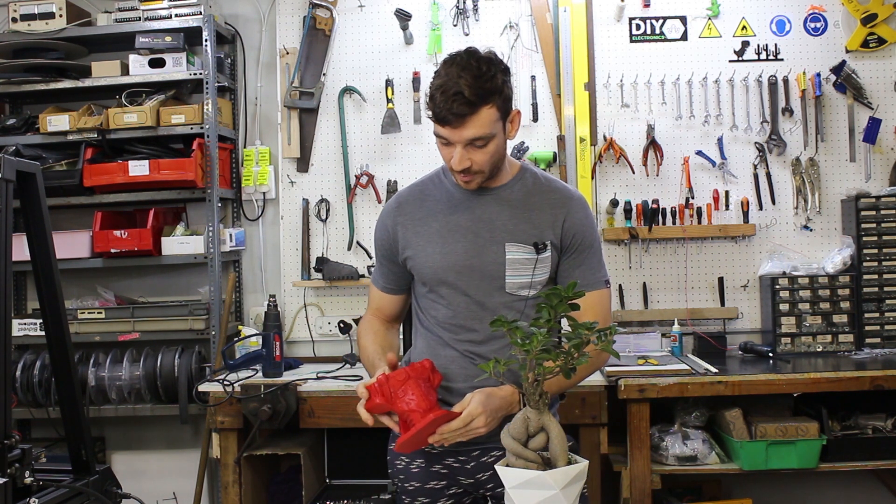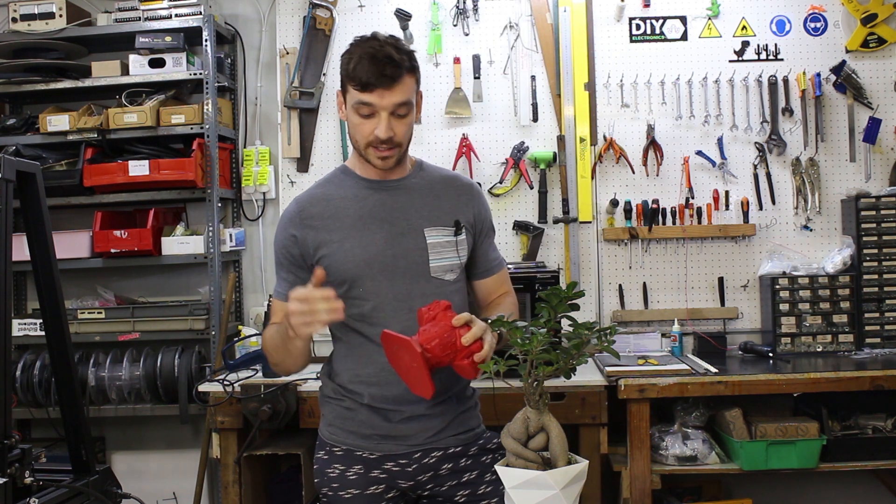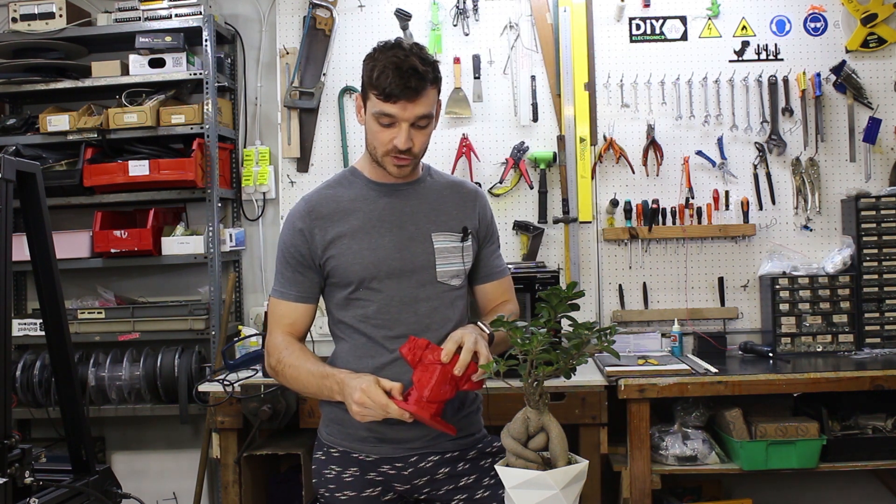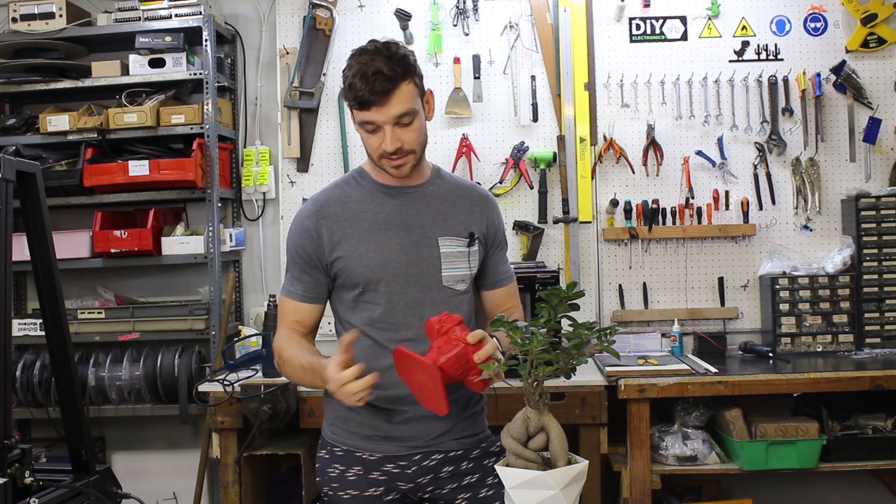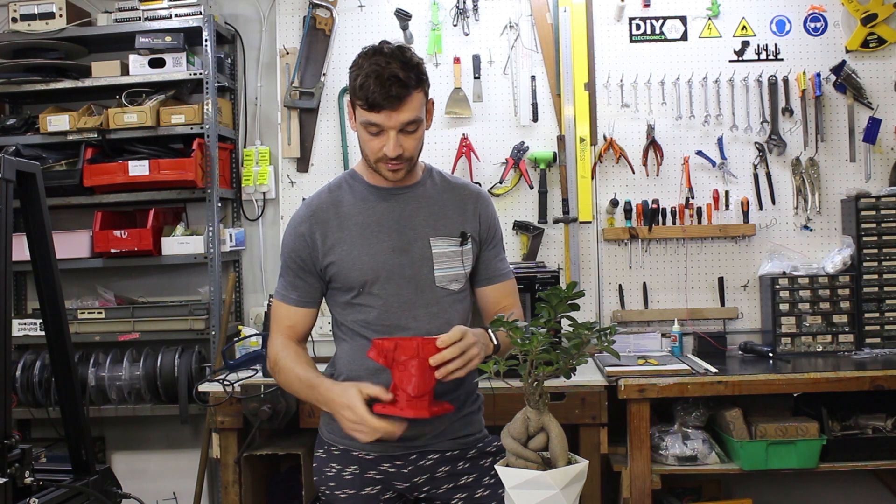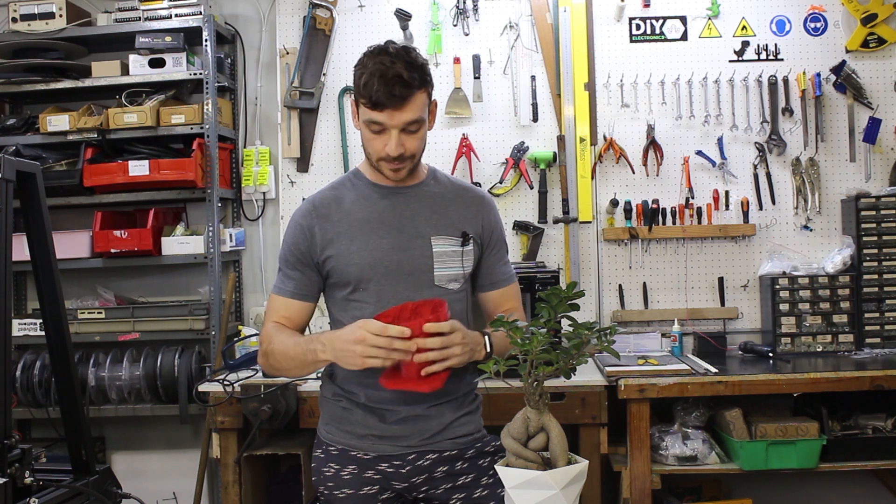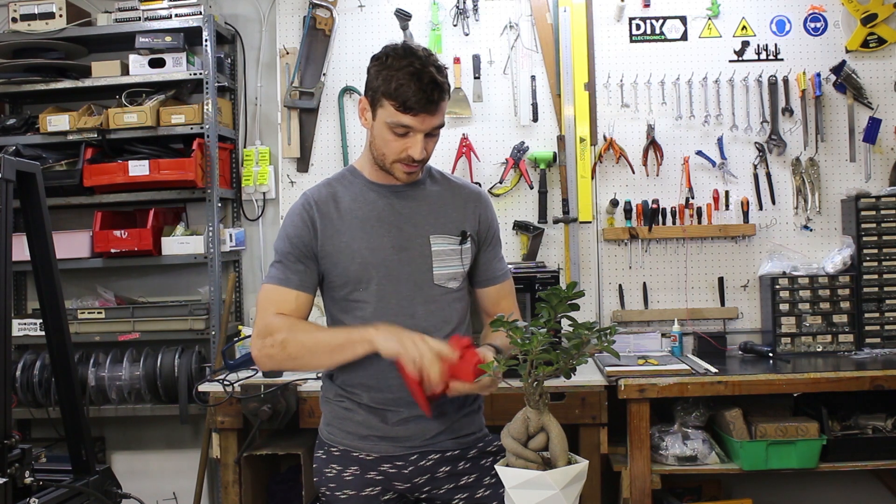We also have a very popular print, the Deadpool bust. What we've done here is we've used Simplify3D and we've actually made two processes. We've got one process for the base, and the base has some infill to give it some stability and strength. Then on the top for the bust, we actually have no infill. Yeah, three outline perimeter shells, and this is really strong.